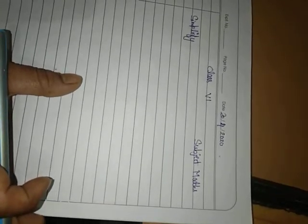Hello students, yesterday I told you about the whole number and the four properties: commutative, closure property, associative property, and distributive property.